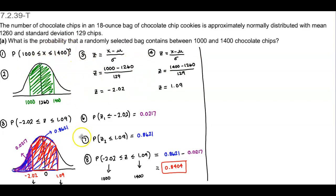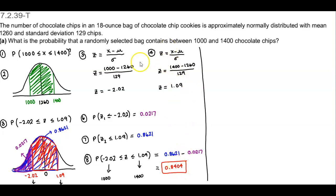We did this problem already at the beginning of the section. We end up converting them to Z-scores to get this area. Now in this question, they're not asking us to convert to Z-scores, so our area is going to be different. Using technology, they only want you to use the original numbers.